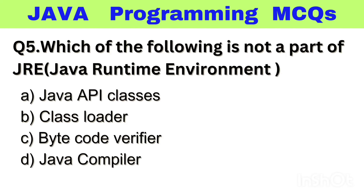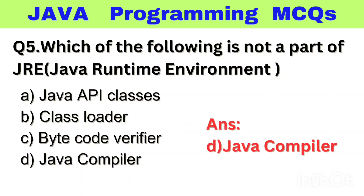Question number 5. Which of the following is not a part of Java Runtime Environment? Option A: Java API Classes, B: Class Loader, C: Bytecode Verifier, D: Java Compiler. The right answer is option D, Java Compiler.